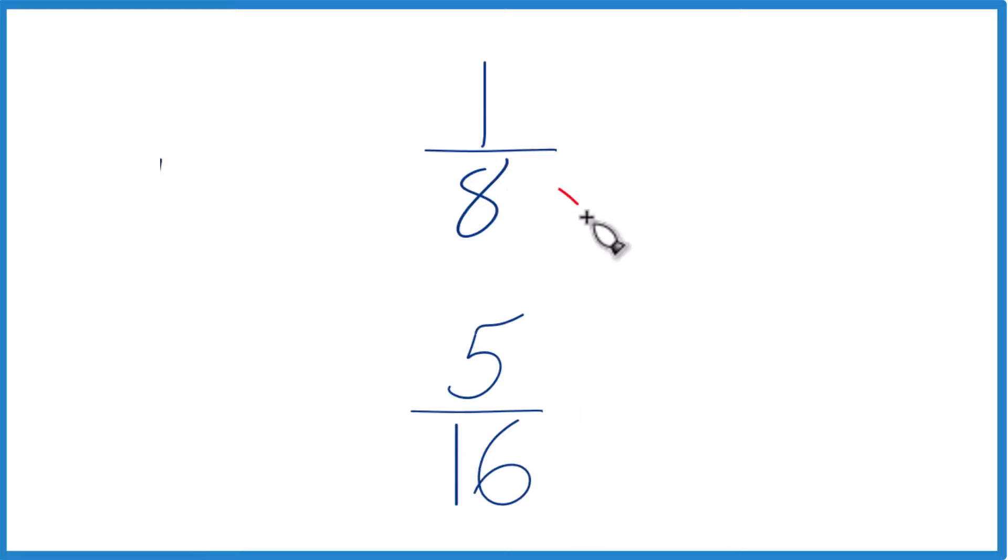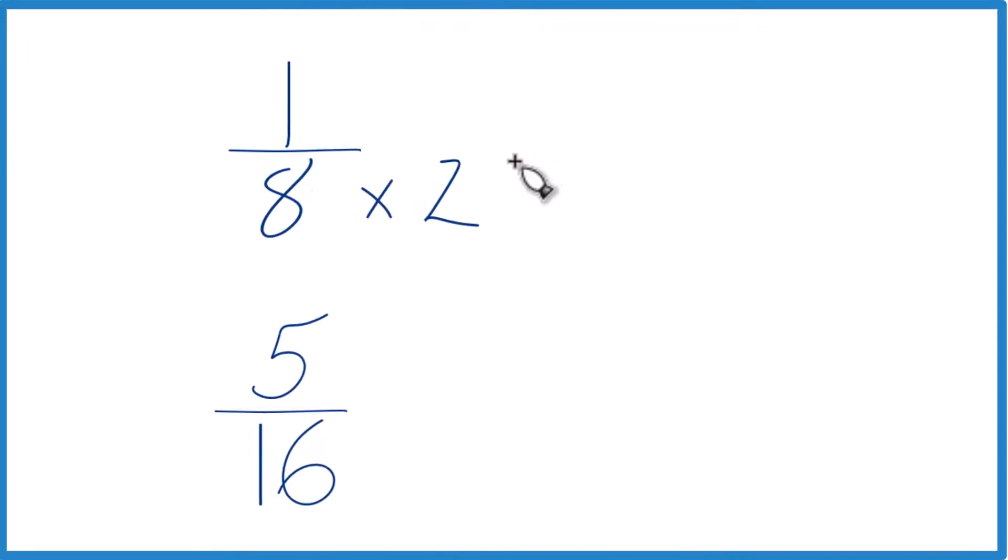So if I multiply 8 times 2, that gives me 16 here as the denominator. Down here I already have 16. So let's just write that again, 5 sixteenths.